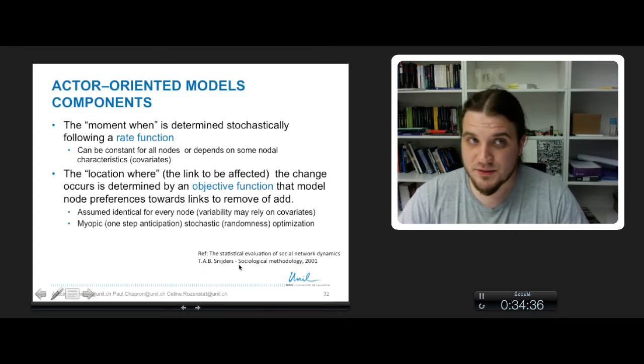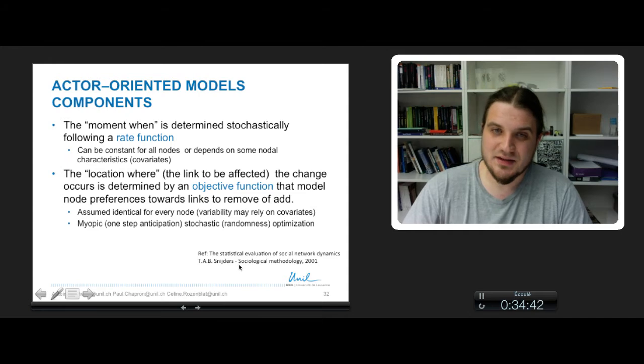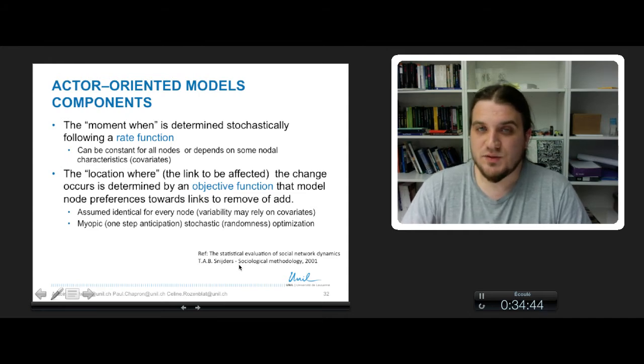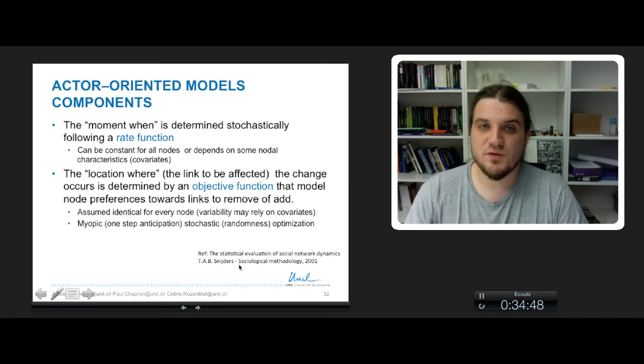The second component of actor-oriented models is the objective function. And this objective function is a guide that is used for a node to choose the link to be removed or added with another node.